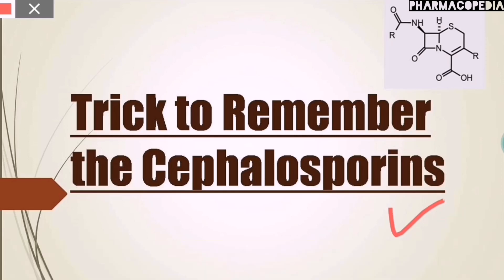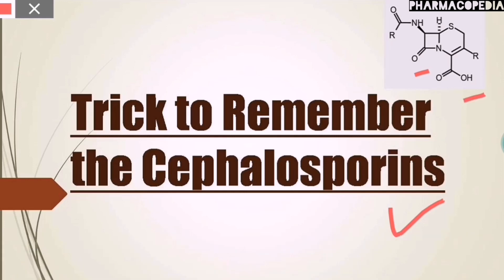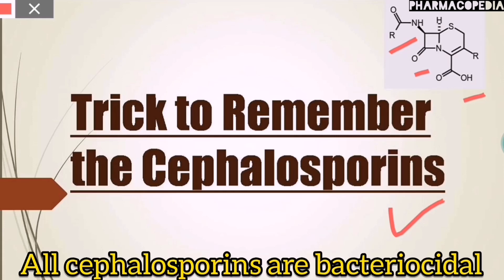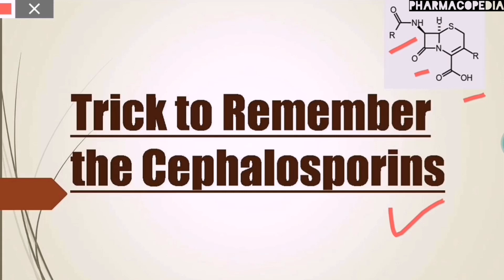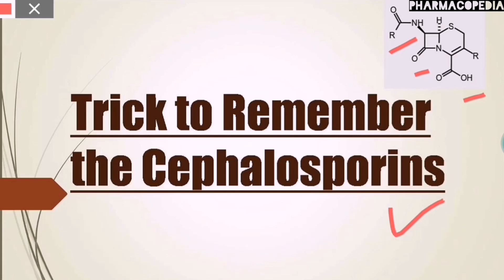Cephalosporin is a semi-synthetic antibiotic obtained from a fungus called Cephalosporium. When you look at its structure, it consists of a beta-lactam ring fused to a dihydrothiazine ring, also with certain modifications at position 7 where the antibacterial spectrum of activity is altered. All cephalosporins are bactericidal and act by inhibition of bacterial cell wall synthesis.